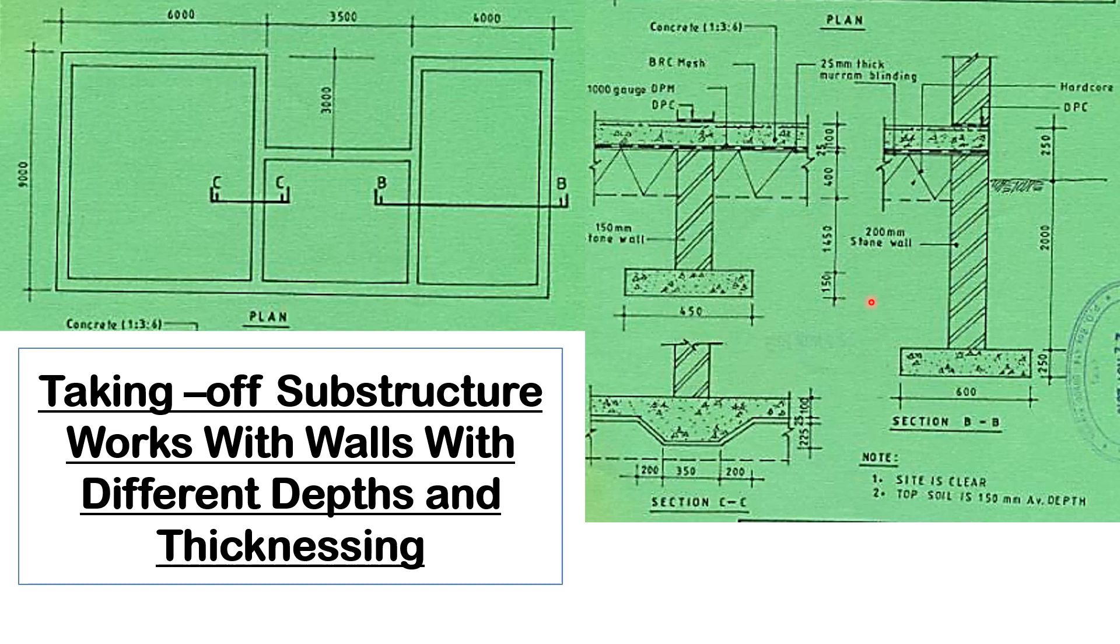The section here has a vibrated reinforced concrete—it is 250. The strip footing is 600, then the height of this wall up to the ground level is 2000. Then from the ground level to the slab, it's 250 to the top of the slab.